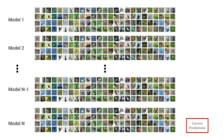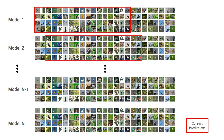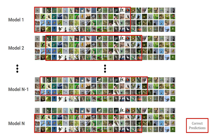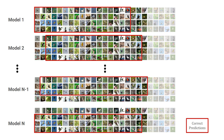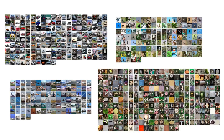We train n different models on the same FGVC task and look at their predictions for each image, and we observe two things. First, their predictions don't always align, and second, there is a portion of the data that none of the models are able to classify correctly. We call these universally misclassified images the Elusive Images, and find that they exist in each dataset we considered.